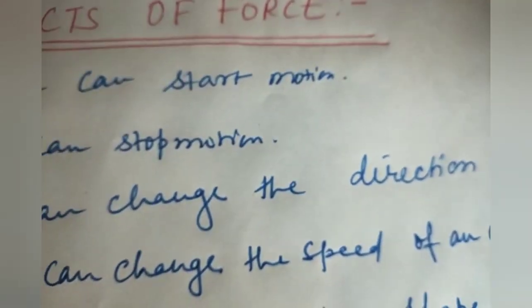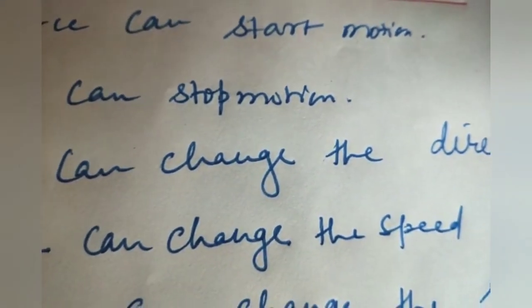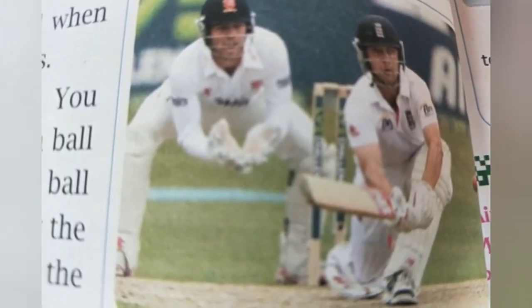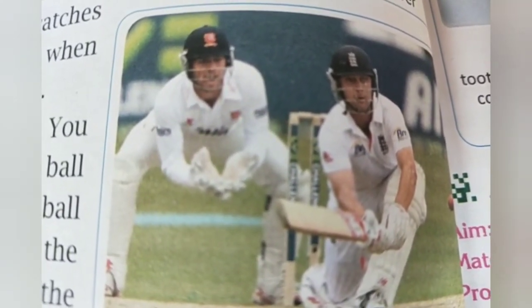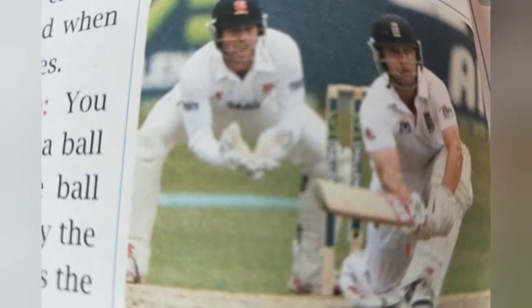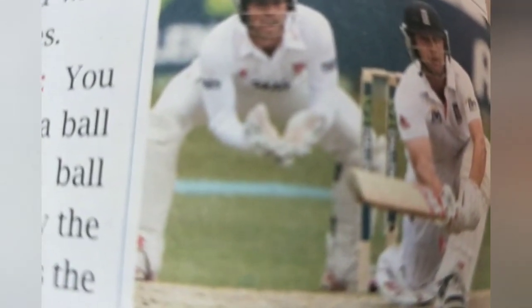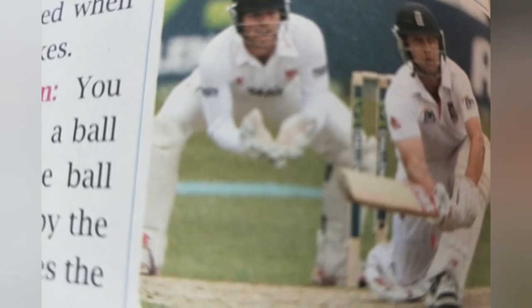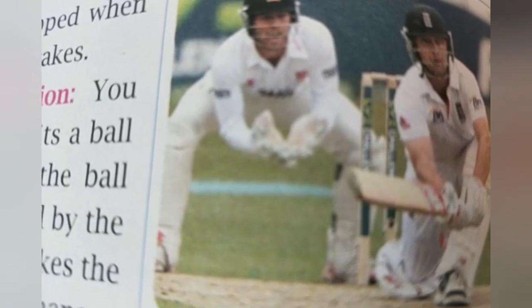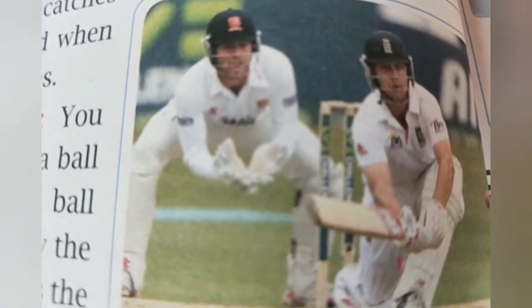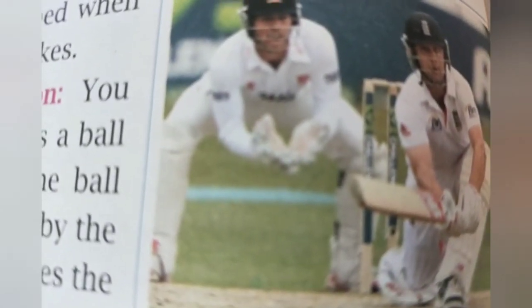The third effect is: force changes the direction of motion. When a batsman hits the ball, force is applied through the bat and the ball changes its direction. Force can also change the speed of a moving object. If you apply force in the same direction, the object moves faster; if you apply force in the opposite direction, the speed of the moving object decreases.